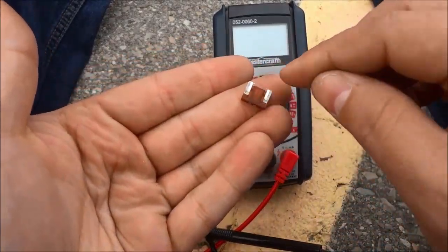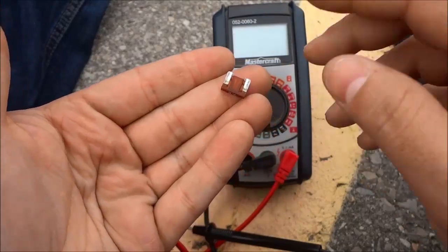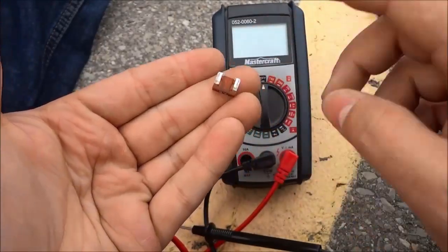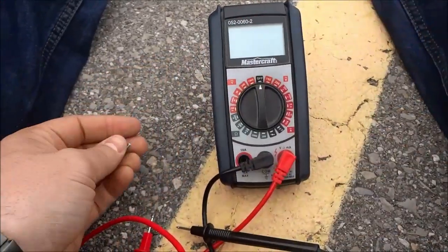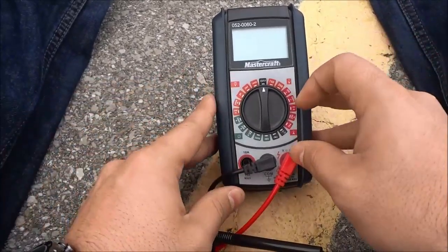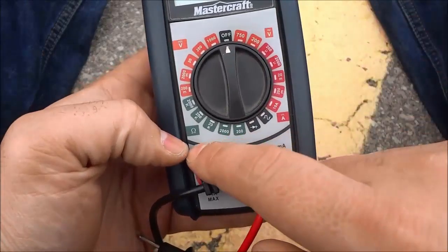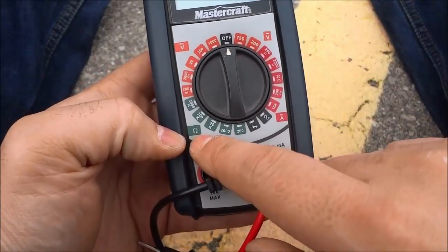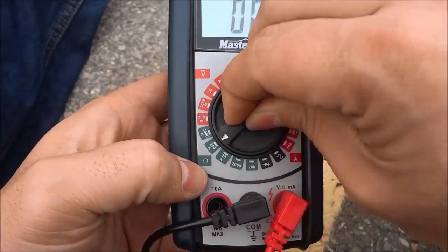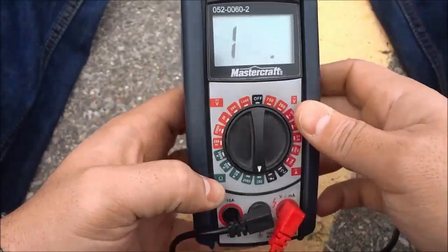Now this is a small type of car fuse but the process will be the same for these types of car fuses and bigger types. The first thing you're going to do is take your multimeter and turn it to the continuity setting. With this multimeter I'm turning it to the ohms section and that will allow me to test for continuity.